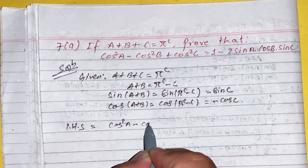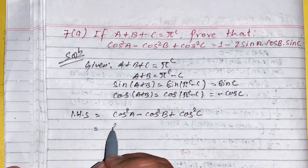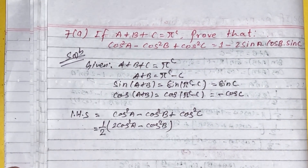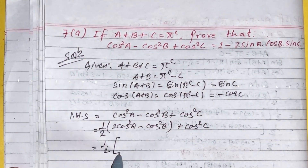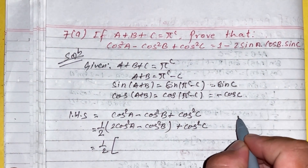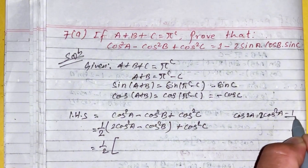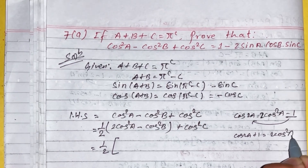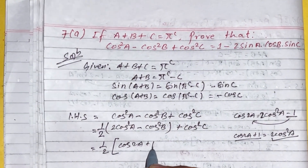Starting with LHS: cos square a minus cos square b plus cos square c. Multiplying the first two terms by 2 and balancing with one-half. Using the identity cos 2a equals 2 cos square a minus 1, so 2 cos square a equals cos 2a plus 1.